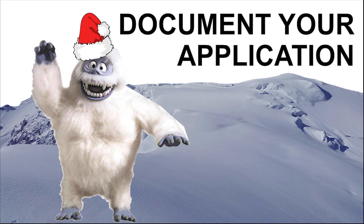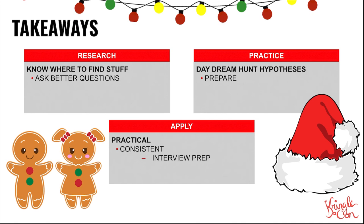So some of the main takeaways — research: the main goal is to be able to ask better questions and to know where to find stuff. There's so much stuff out there; the faster you know how to find it, the faster you can get the answer, the faster you can hunt the badness. Next one, practice: you want to daydream hunt hypotheses. Someone talks about some sort of attack — how would I hunt that? Run that through the hypothesis development process and the hunt cycle, and it helps you prepare. That way, if your CISO or your VP or your manager comes to you and says we need to hunt this, you'll be like, I got this — I've already been thinking about it, here's how I would do it. Finally, apply: you want to make sure that you're practical and consistent, and the end goal besides being super awesome day one on the job is to prepare for the interview.